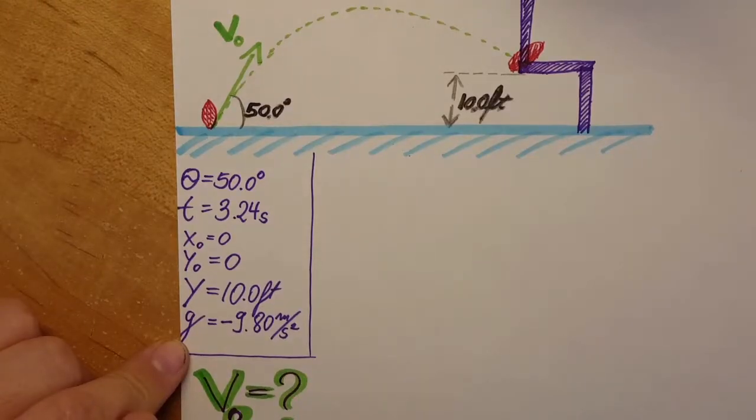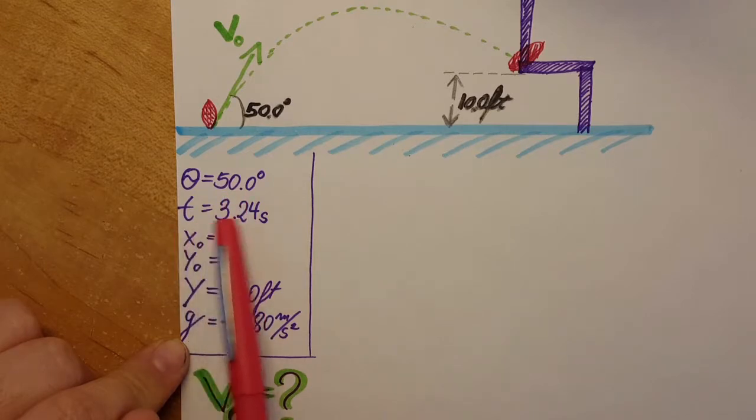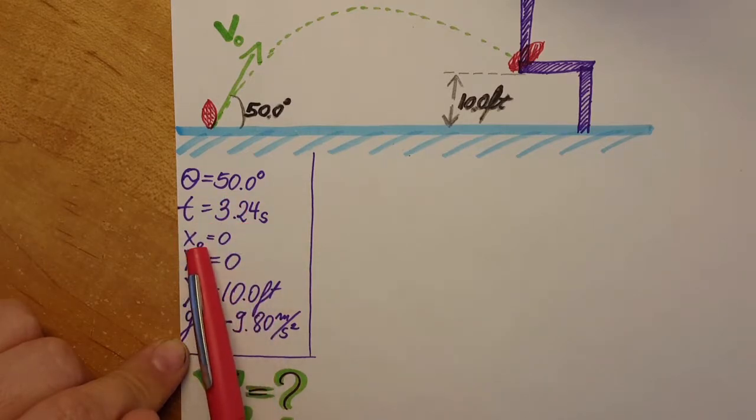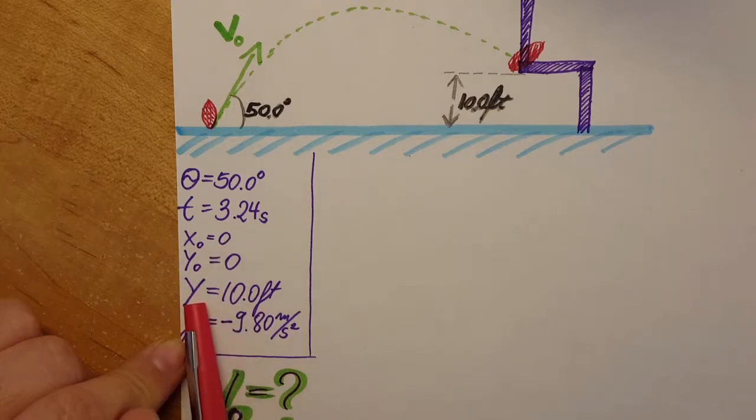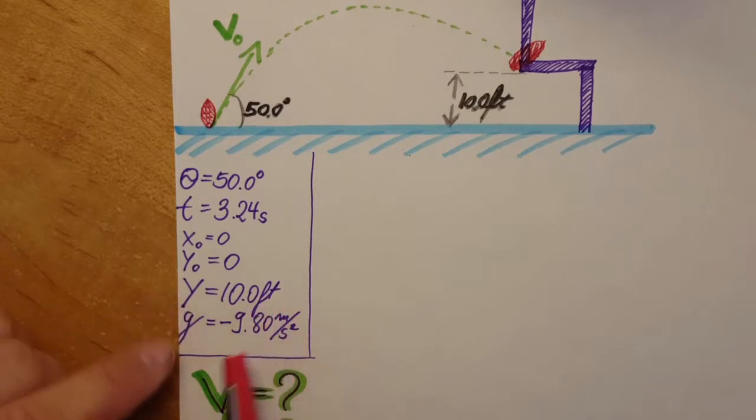Okay, these are the values that we know. We have theta 50 degrees, time 3.24, x0 and y0 will be 0, our final y will be 10 feet and gravity negative 9.8 meters per second squared. Alright, let's get started.